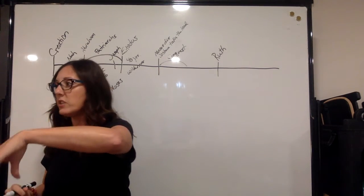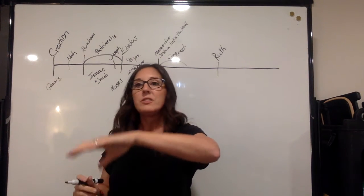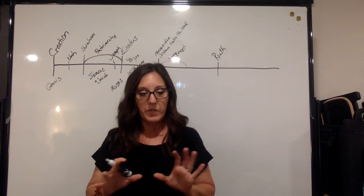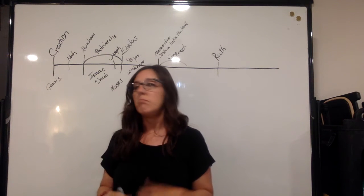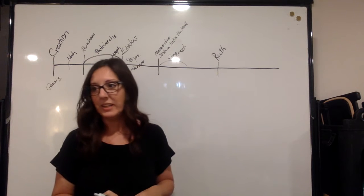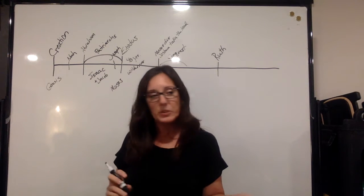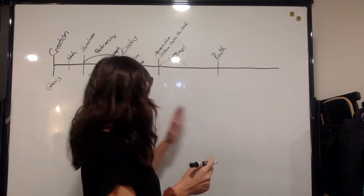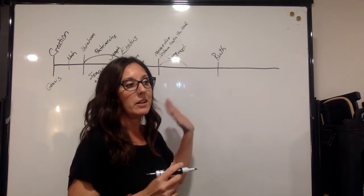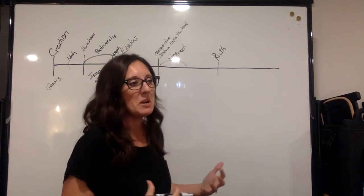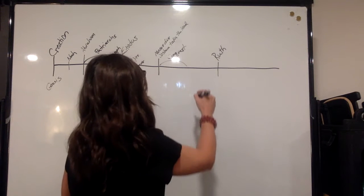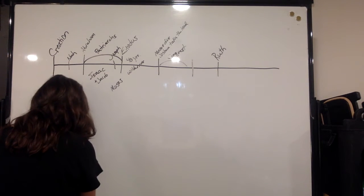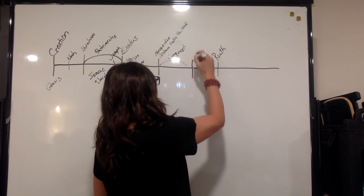Joshua takes the lead. They're on the edge of Canaan, the land God had promised to Abraham. They finally come to the conquest — they fight and conquer Canaan, supposed to destroy all of those nations so that they are the only ones in that area. But if you know the story, they don't actually do it all the way.